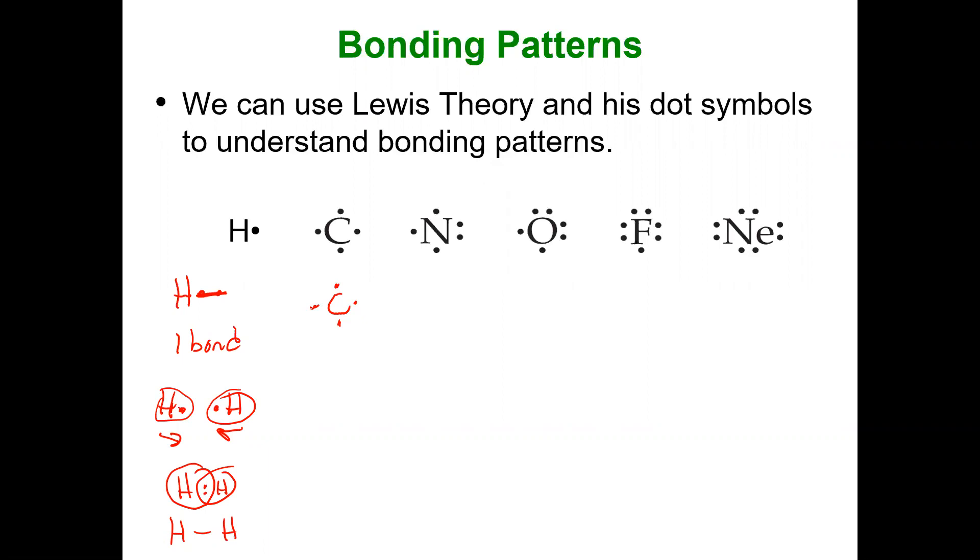Carbon needs four electrons. So what is it going to do? It's going to form four bonds. Nitrogen, it's got five valence electrons because it's in group 5A. What does it want to do? It needs three more electrons, three more bonds.